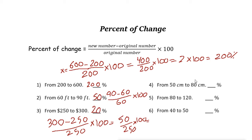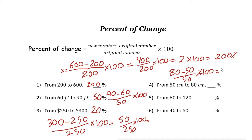Next one: 50 to 80. The new number is 80. So it is 80 minus 50, over 50 the original number, times 100. 80 minus 50 is 30 over 50. 30 over 50 is 3 fifths times 100, which gives 60. So it is 60 percent.